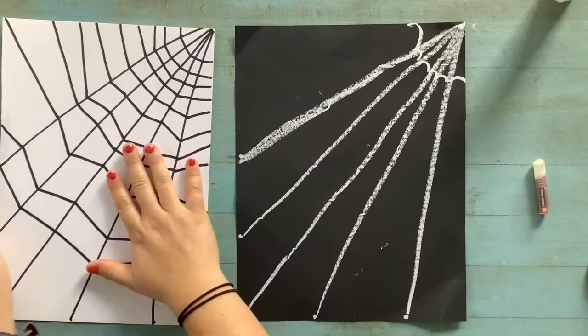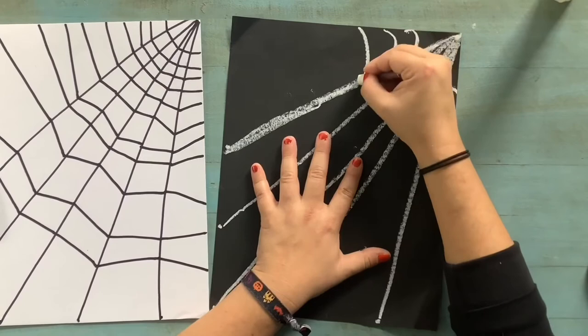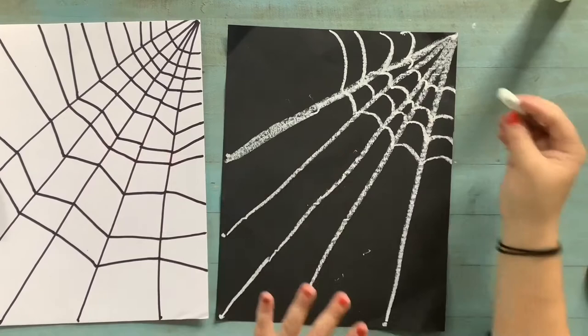Now it's time to do the same thing over here on the black paper, but instead I'm going to use a bumpy line. If the bumpy line is a little bit too tricky, don't forget that you can use straight lines too.